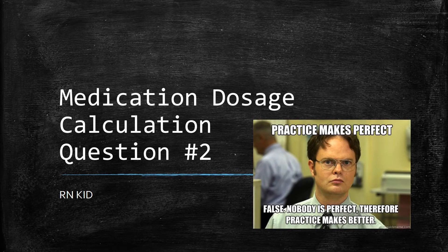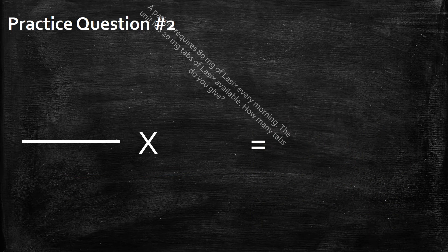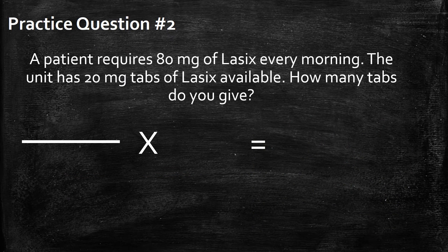Medication dosage calculation question number two. A patient requires 80 milligrams of Lasix every morning. The unit has 20 milligram tabs of Lasix available. How many tabs do you give?